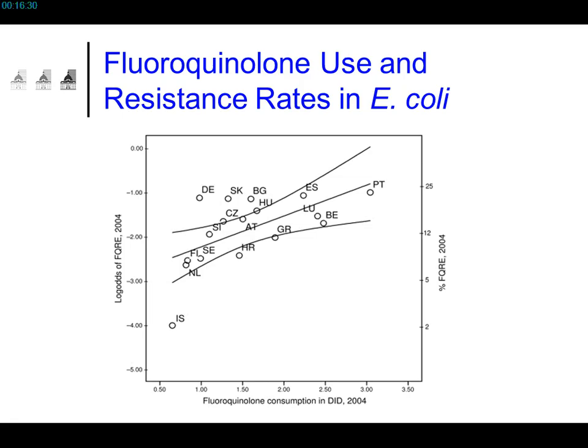Here is one study, but there are hundreds proving the link between antibiotic consumption and the emergence of antibiotic resistance. Each dot represents a European country. On the x-axis is consumption of fluoroquinolones; on the y-axis, the share of E. coli strains resistant to fluoroquinolones. There is an undisputable statistical relation.